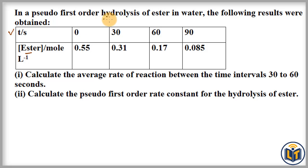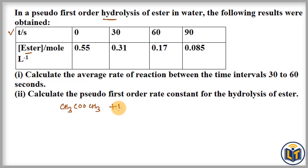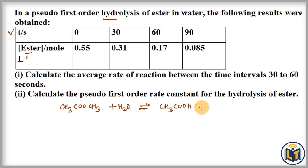Let me write the hydrolysis reaction of esters. Here we have ester CH3COOCH3 and it undergoes hydrolysis — meaning in presence of water — and the products produced in this reaction are one acid and one alcohol.